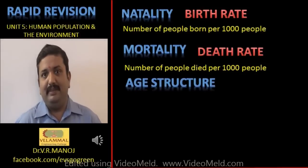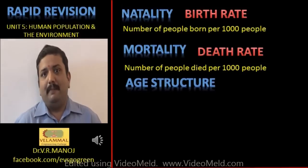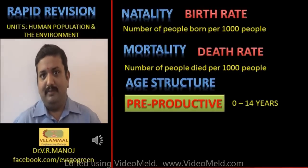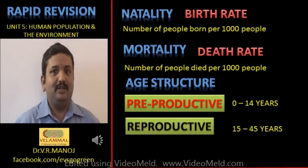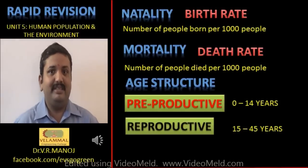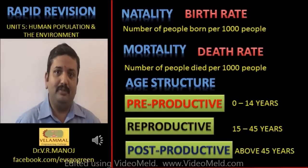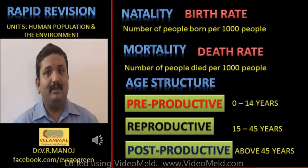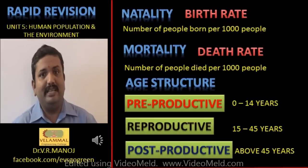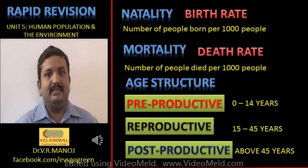After mortality and natality, you have what is called age structure. In age structure there are three major components: the pre-reproductive age group which is 0 to 14, the reproductive age group which is 14 to 45, and the post-reproductive age group which is above 45.